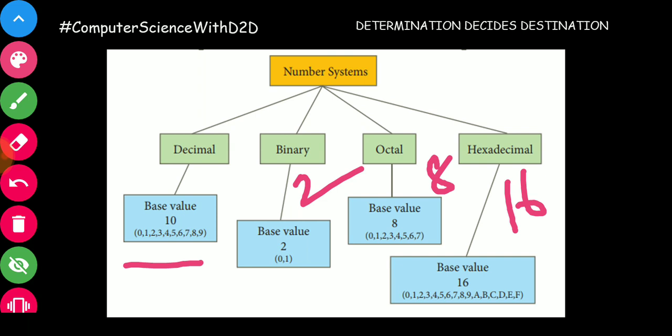This is the basic thing. In the decimal number system generally, you can use values 0 to 9. This is a common number system. So, base value is 10 and numbers are 0 to 9.